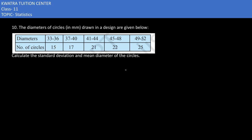First of all, we will make this continuous data. You can see that they are discontinuous — there is a gap. So, what do we do? We subtract 0.5 from the lower value, so it becomes 32.5. And to 36, we add 0.5, so it becomes 36.5. The next class interval starts at 36.5 and ends at 40.5.